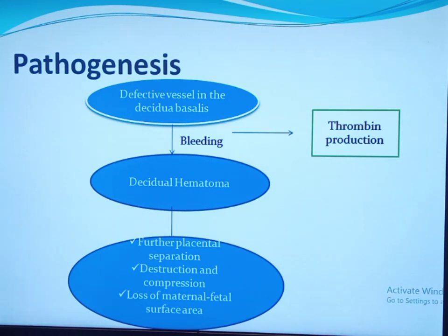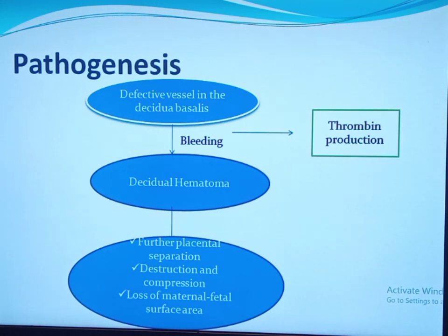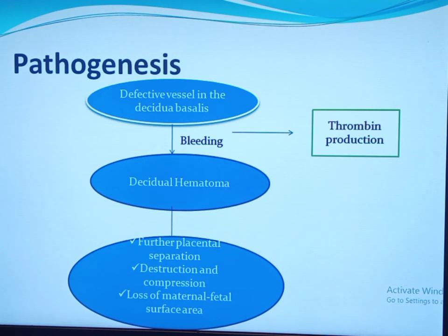Regarding pathogenesis: bleeding in placental abruption is primarily of maternal origin. Defective maternal vessels in the decidua basalis rupture, causing bleeding that results in a decidual hematoma. The decidual hematoma causes further placental separation, destruction and compression of adjacent placental tissue, and loss of maternal-fetal surface area for nutrient and oxygen exchange. The bleeding also stimulates thrombin production via two pathways: decidual bleeding releases tissue factor that stimulates prothrombin-to-thrombin conversion via activated factor VII.